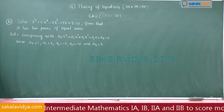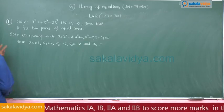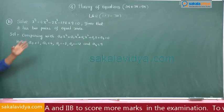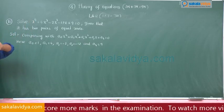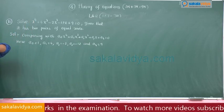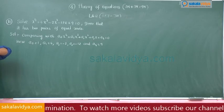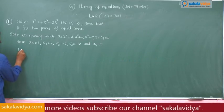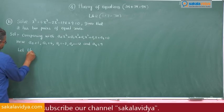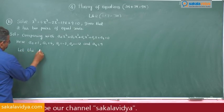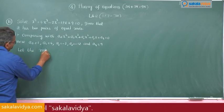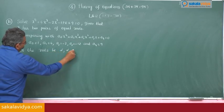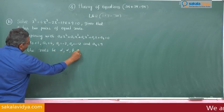Two pairs of equal roots means the four roots are alpha, beta, gamma, delta — that is, alpha, alpha, beta, beta. So let the roots be alpha, alpha, beta, and beta.